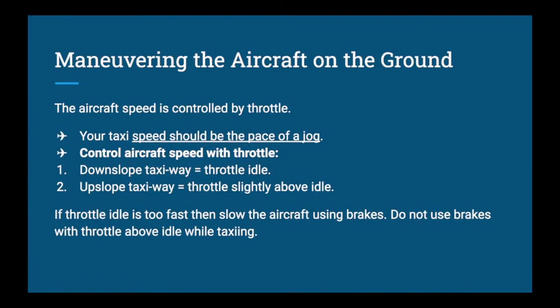Starting with controlling speed: the speed of your taxi is controlled with the throttle. If you increase your throttle the airplane will roll faster, and if you want to slow down you reduce the throttle all the way to idle. The speed you're looking for is like the pace of a jog — not too fast, not too slow. Always look in both directions while maneuvering. If you're at throttle idle on a downsloping taxiway and start to roll too fast, that is a scenario where you'd want to use brakes, but do not use brakes with throttle at the same time.